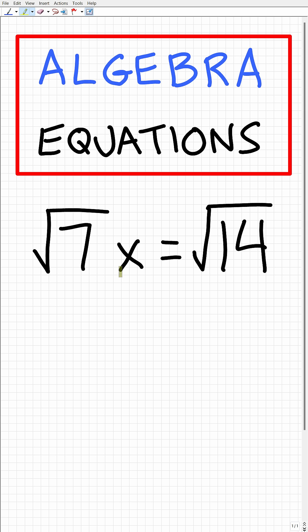What we have is the square root of 7x is equal to the square root of 14. Now some of you might be a little bit troubled with these square roots, but really we have a number times x is equal to another number.